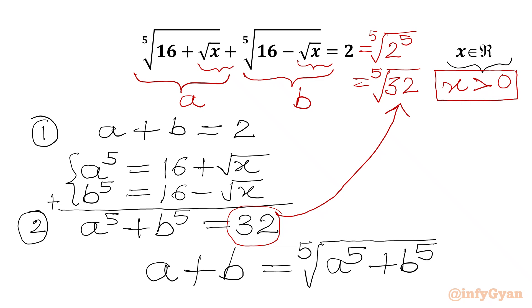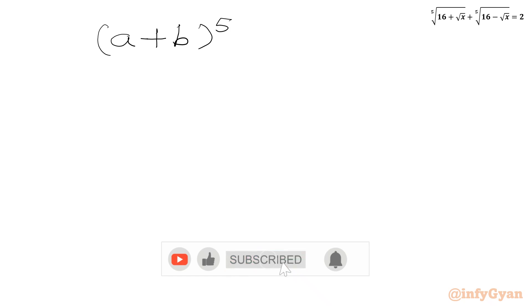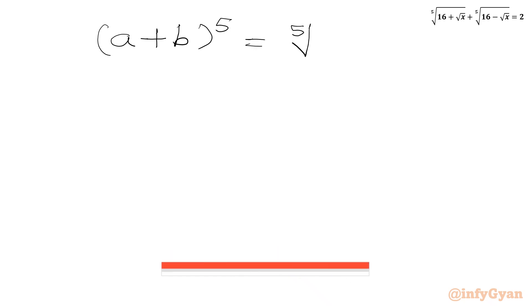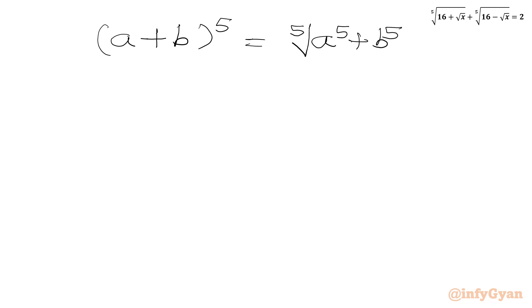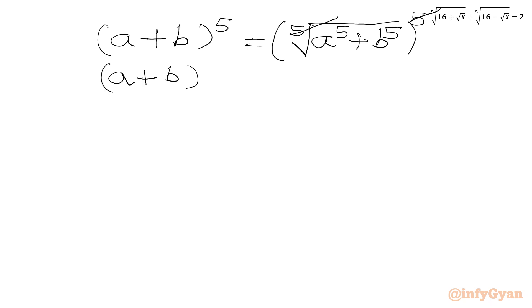Now we will raise both sides to the power 5. So we write (a plus b)⁵ equals the 5th root of (a⁵ plus b⁵), all raised to the power 5. The 5th root and power 5 on the RHS cancel out, giving us (a plus b)⁵ equals a⁵ plus b⁵.